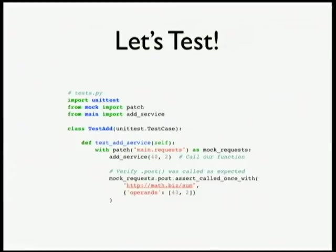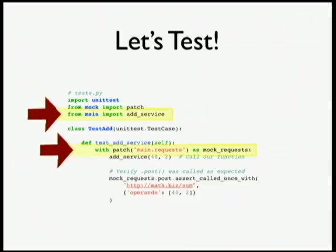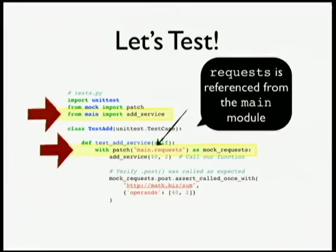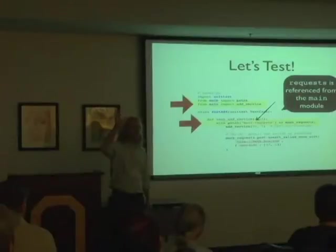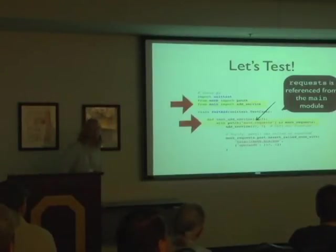Here's what the test looks like. I import my add service — that's the function that I'm testing — and then I patch. Here's the part where a lot of people get tripped up: I patch the requests module in the main module, so main.requests. That bit of code is the "where am I patching" bit. How many of you got tripped up on this the first few times you used patch?